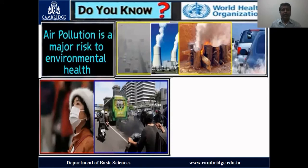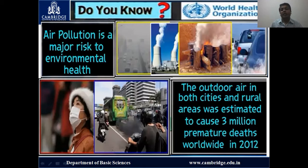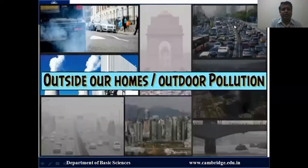According to the WHO, air pollution is a major risk to environmental health. Outdoor air in both cities and rural areas was estimated to cause around three million premature deaths worldwide in 2012 statistics. Premature death means people die before the average life expectancy. Looking at these pictures, they are self-explanatory, depicting the extent of air pollution taking place in outdoor areas of both urban and rural areas.